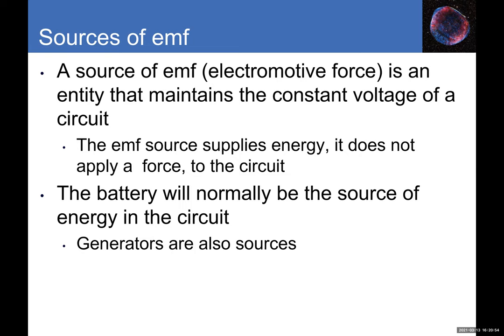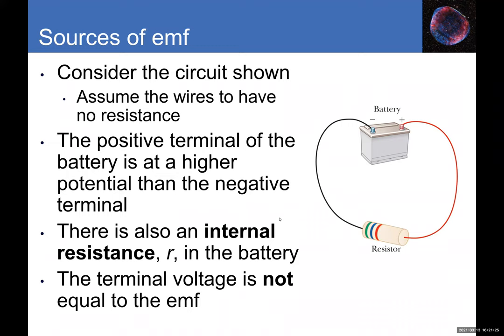Capacitors cannot be considered EMF sources because they cannot maintain a constant voltage — once their stored energy is used, it's gone. EMFs like batteries maintain constant voltage through chemical reactions. The chemical energy inside the battery is converted to electric energy. So if we connect an EMF source to a resistor, it provides a current running through the circuit.